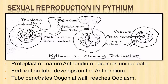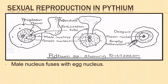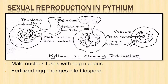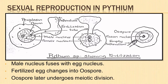The fertilization tube pierces the periplasm and reaches the ooplasm. It introduces a male nucleus with a certain amount of cytoplasm into the egg. The male nucleus fuses with the egg nucleus. The fertilized egg secretes a thick smooth wall and changes into an oospore or resting spore. Prior to germination, the oospore nucleus undergoes zygotic meiosis.